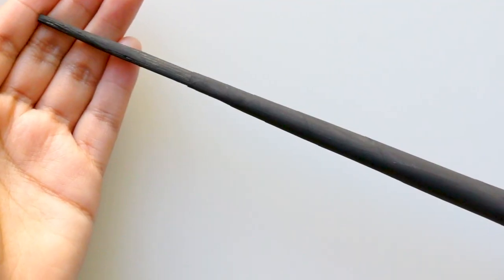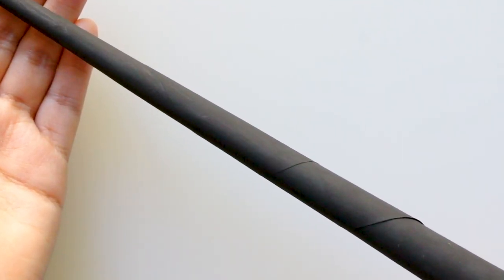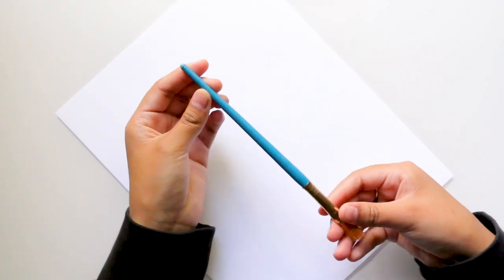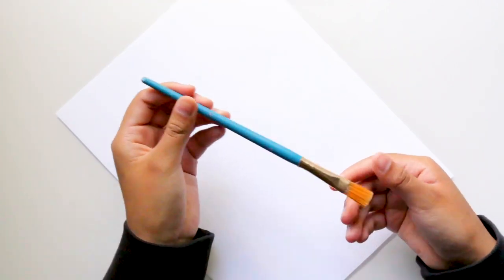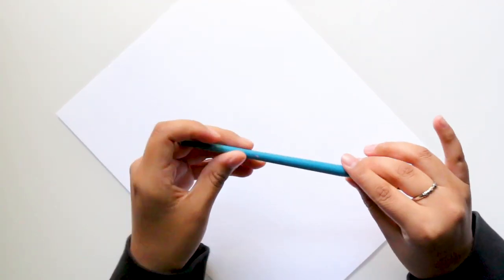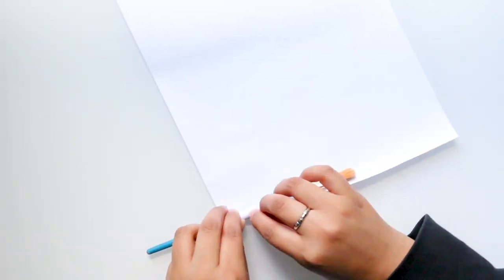This wand was definitely the easiest to make and I love the way it turned out. For the paintbrush version, the process is the same as the chopstick. Just make sure that the brush part is rolled in the paper so it's hidden inside.